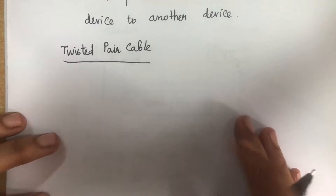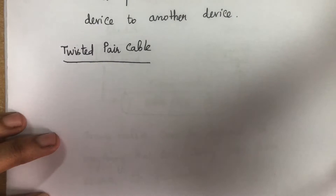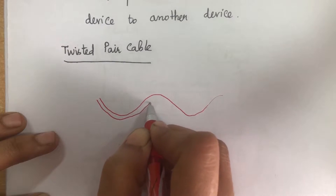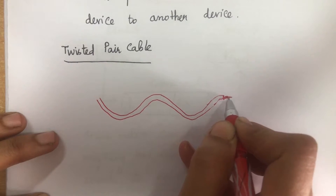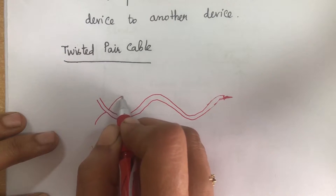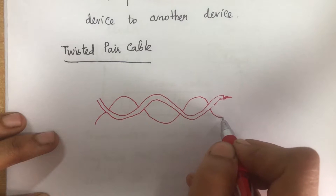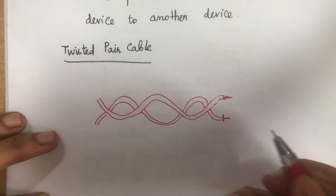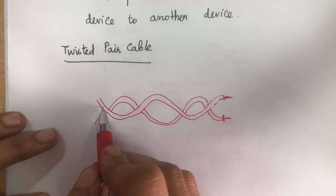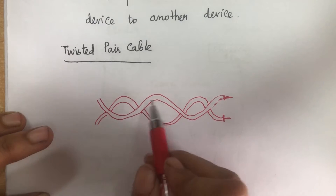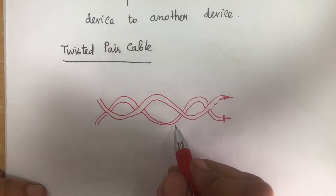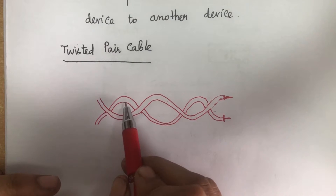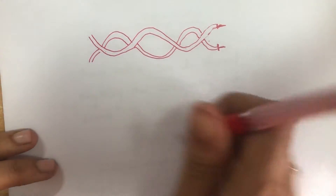Twisted pair cable consists of two insulated copper wires arranged in a spiral pattern. One wire will send the signal and the other wire will act as the ground reference. There are two types of twisted pair cable.